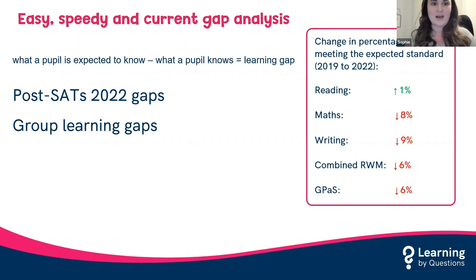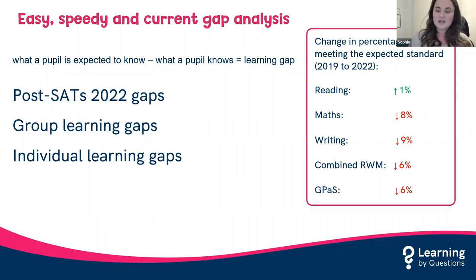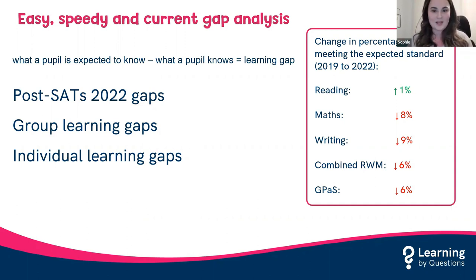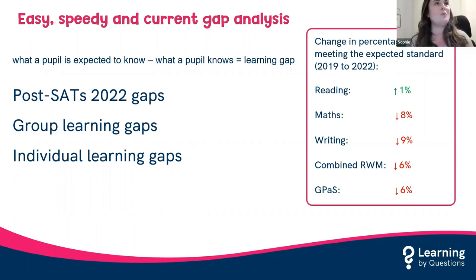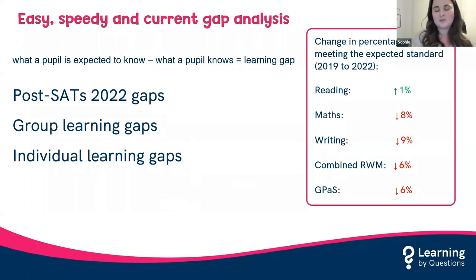Group learning gaps — where children have all missed huge chunks of learning topics because of COVID — are a bit easier to address in terms of delivery, since everyone missed them and you can just plan that unit in elsewhere, though with time pressure. Individual learning gaps have always been around pre-COVID — when an individual child misses a topic or objective, perhaps due to an absence for a day or two. We all know how irritating it is when a child misses the first lesson of a new topic and is a whole lesson behind.